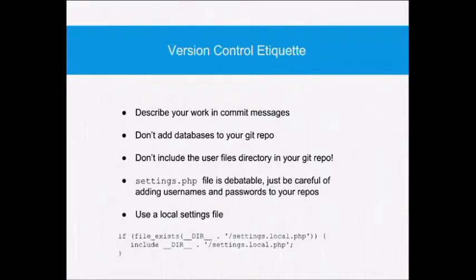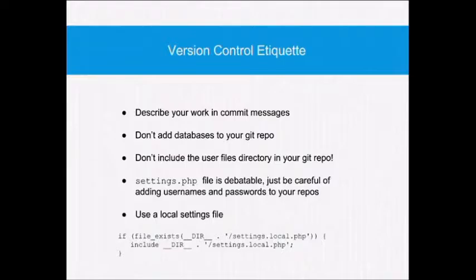Don't add databases to your Git repo — it doesn't really help, especially since as soon as the client changes anything, the database is already out of date. You should be reproducing the site through things like Features and config changes rather than a blank database. Surprisingly, I recently saw someone who had added the user files directory to the Git repo, which meant every time I had to deploy, I had to do complicated juggling of user files — because they effectively became Git-controlled resources. Every time a user uploaded a file it showed as a change, which made merge conflicts quite interesting. We had to re-engineer that.